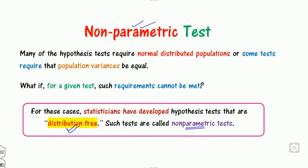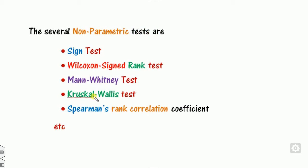There are several types of non-parametric tests: the sign test, Wilcoxon, Mann-Whitney, Kruskal, and rank correlation, etc. We will cover these one by one, and in this lecture we will start with the first one — the sign test.